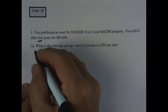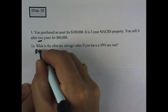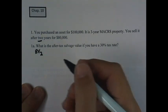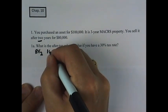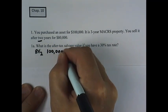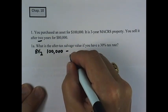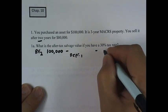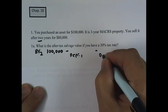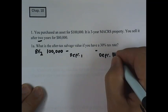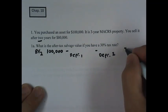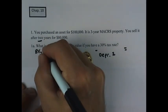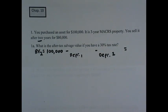The first thing we need to do is calculate the book value as of the time we're going to sell it, which is at the end of year two. So we'll take those two years of depreciation expense off of the $100,000 purchase price to get the book value at the end of year two.